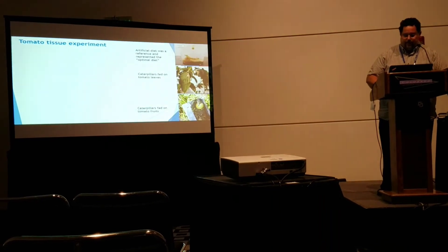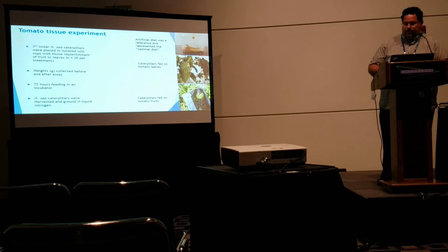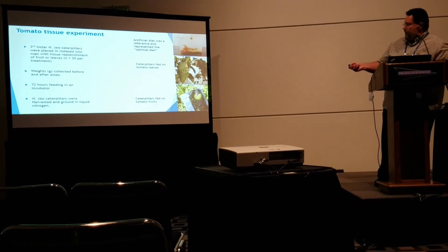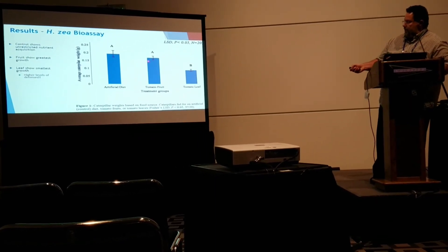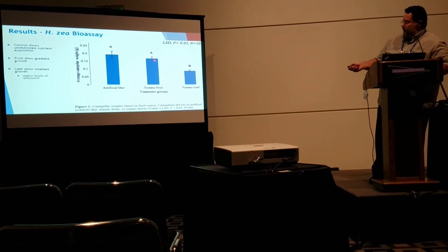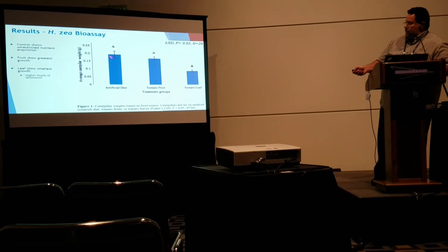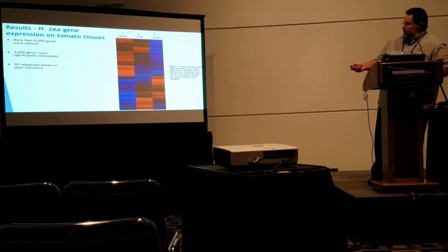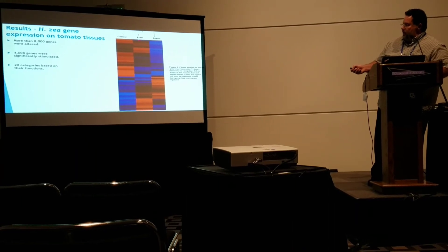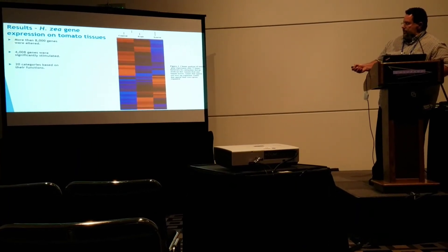Now looking at tomato tissues, we did a similar experiment. Caterpillars are eating an optimal artificial diet, tomato leaves, or tomato fruits. We do our bioassay over three days with third instar caterpillars, and you'll see that they grow a lot better on the tomato fruit than on the tomato leaf, really similar to the control artificial diet. Looking at the heat map, we see a similar result — using a hierarchical cluster, gene expression in the caterpillars is more similar between the control and the fruit than with the leaves. This shows there are probably a lot more genes being upregulated and downregulated as a result of feeding on a harsher food source.